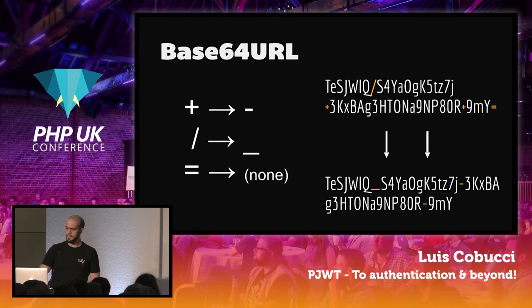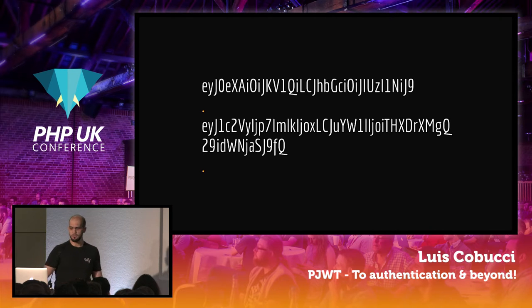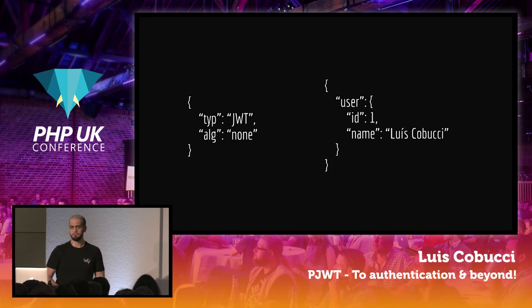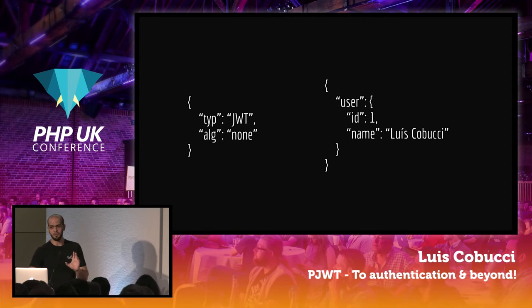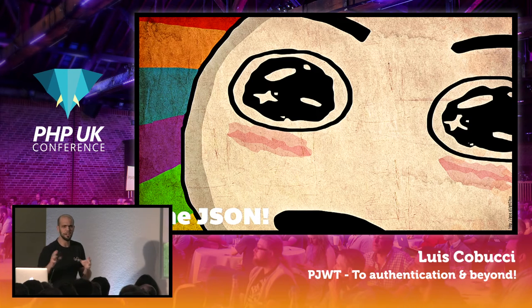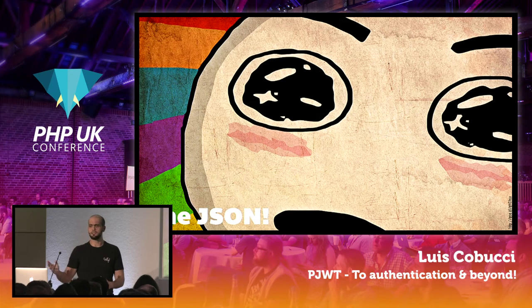So now that we know how to decode this token, let's apply that algorithm. And the result will be this. We have a JSON. Perfect. We can do all sorts of things. We can store anything in the JSON and pass it around.